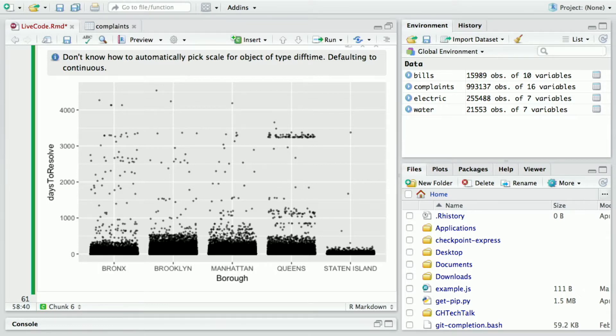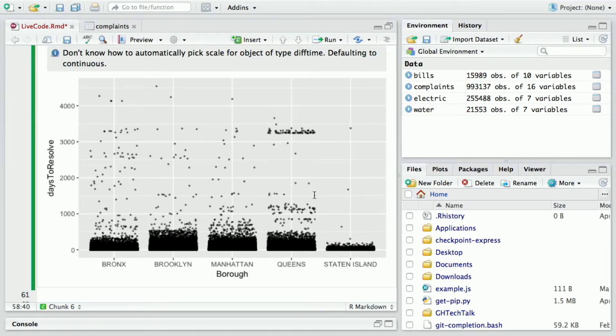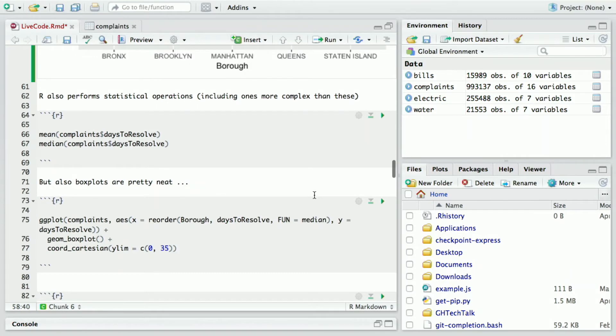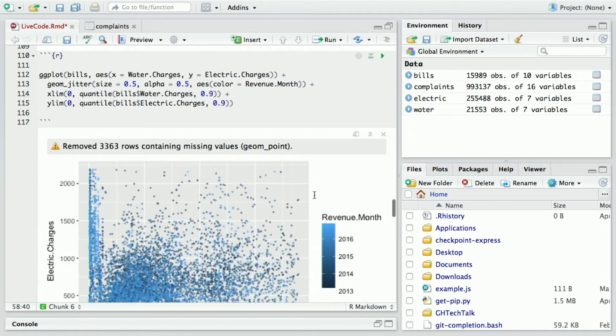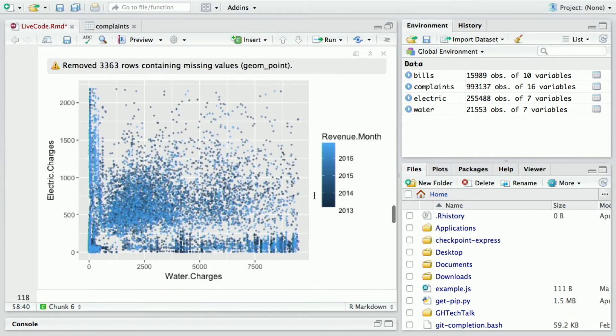So as we can see, most of these complaints got resolved in less than 500 days. There's this weird blip in Queens that for some reason it took 10 years to resolve these complaints, which you know, maybe we wouldn't have known if we didn't do this exploration.